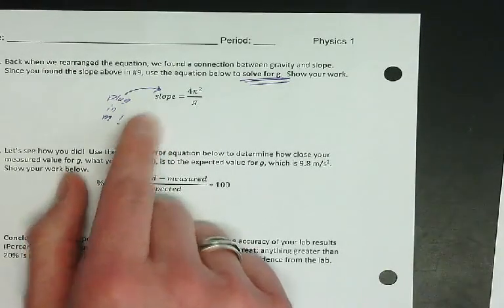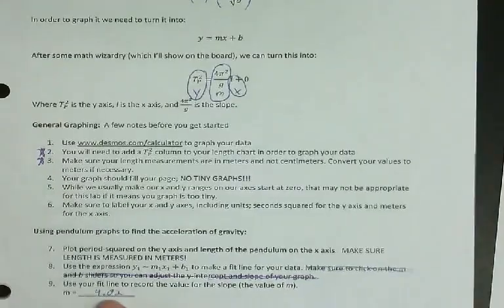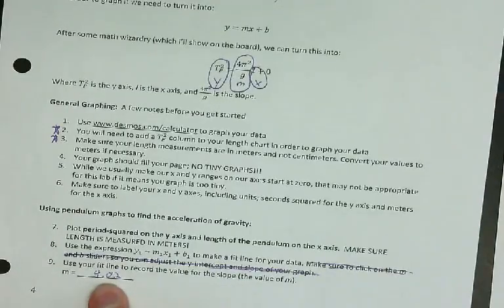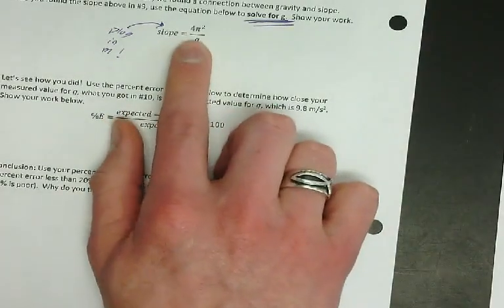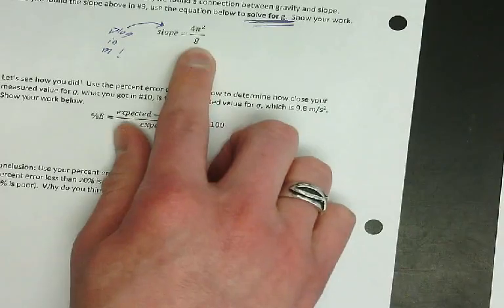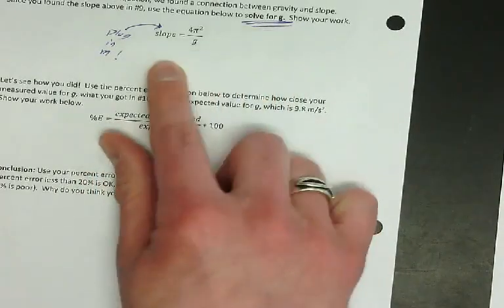You're going to plug that value in. My value was 4.02. You're going to plug in whatever yours is. Then, you're going to plug in and solve for g. Solve for g.